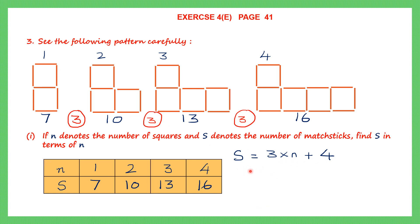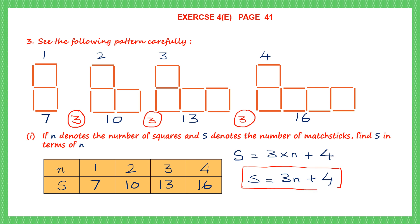We have checked this relation for all four figures and found it to be correct. So our answer is: the relation between S and n is S = 3n + 4, which gives the number of matchsticks in each figure.